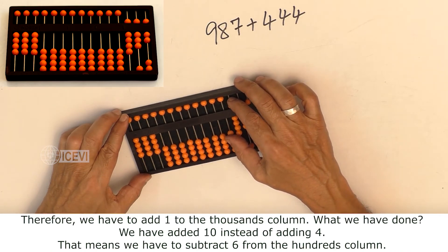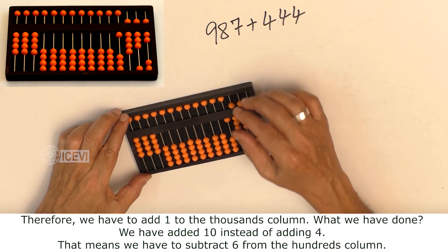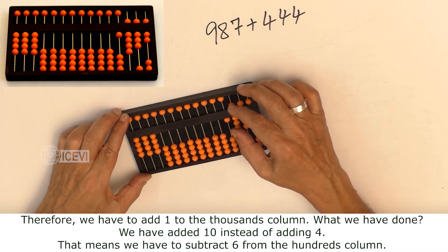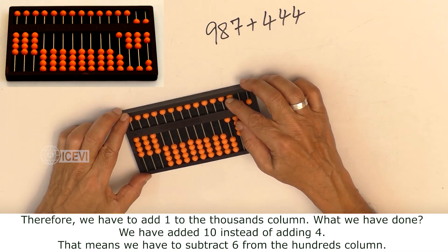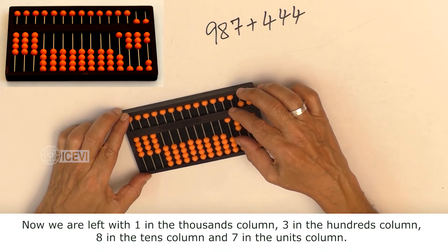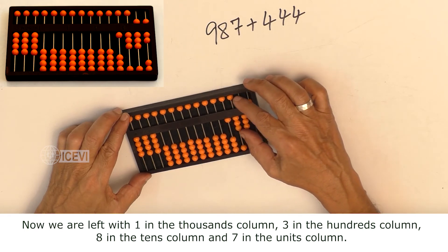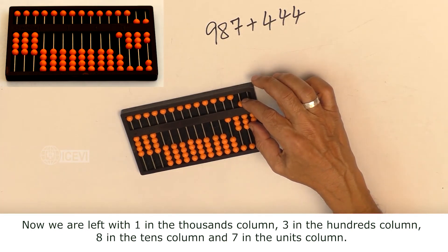Therefore, we have to add 1 to the thousands column, which means we have to subtract 6 from the hundreds column. Now we are left with 1 in the thousands column, 3 in the hundreds column, 8 in the tens column, and 7 in the units column.